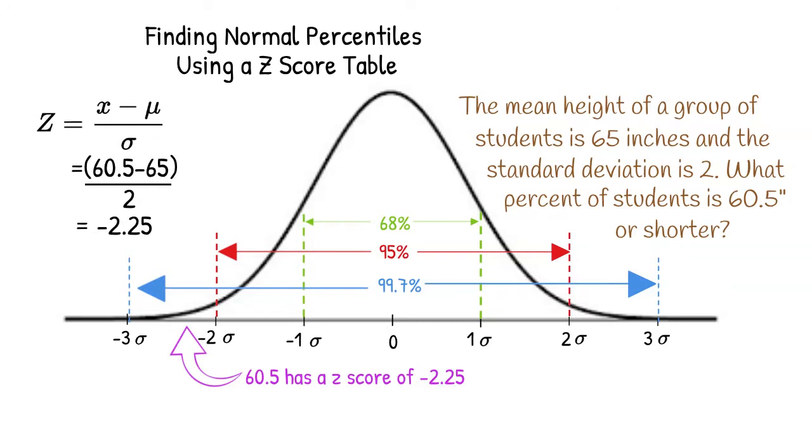Since z is between negative 2 and negative 3, we aren't able to use the 68, 95, 99.7 rule to give us an exact percent of students 65 inches or shorter. To find that percent, we can use a z-score table or a special calculator.